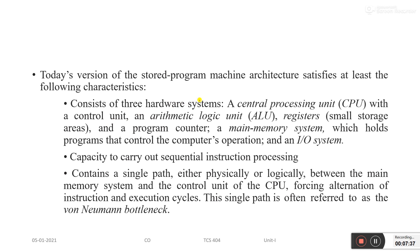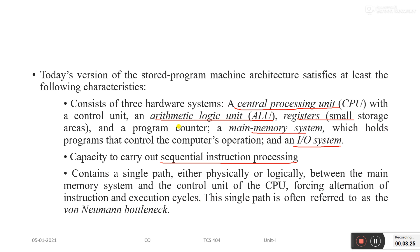The Von Neumann architecture consists of three hardware components: a central processing unit with a control unit, arithmetic logic unit, registers, and a program counter; main memory which holds the program that controls the computer's operations; and input/output systems. It has the capacity to carry out sequential instruction processing. The architecture contains a single path between the main memory and the control unit of the CPU, forcing alternation of instruction fetch and execution cycles.